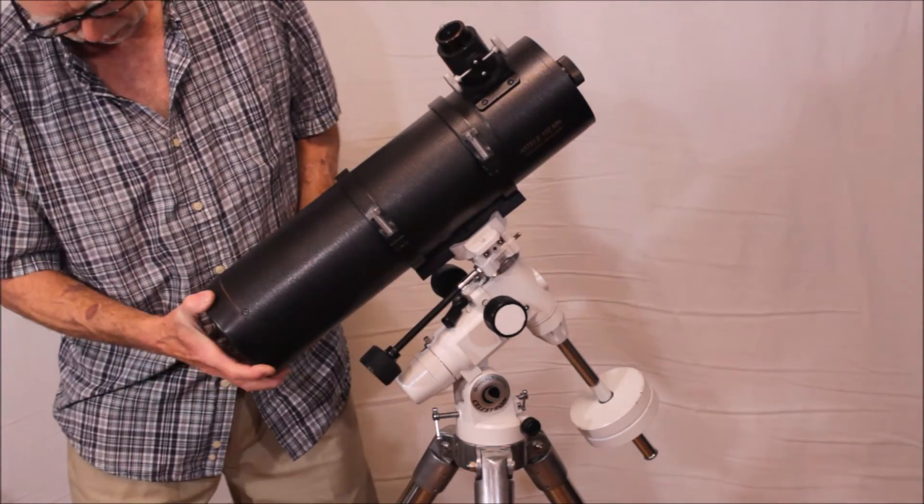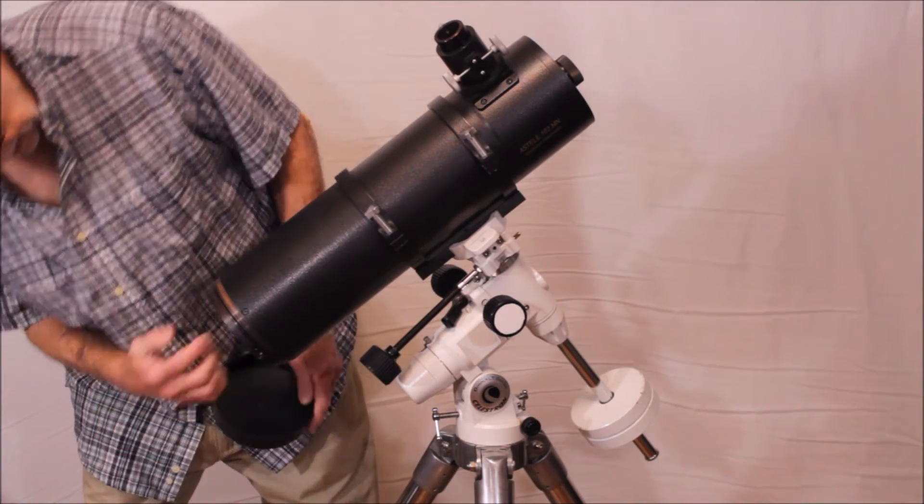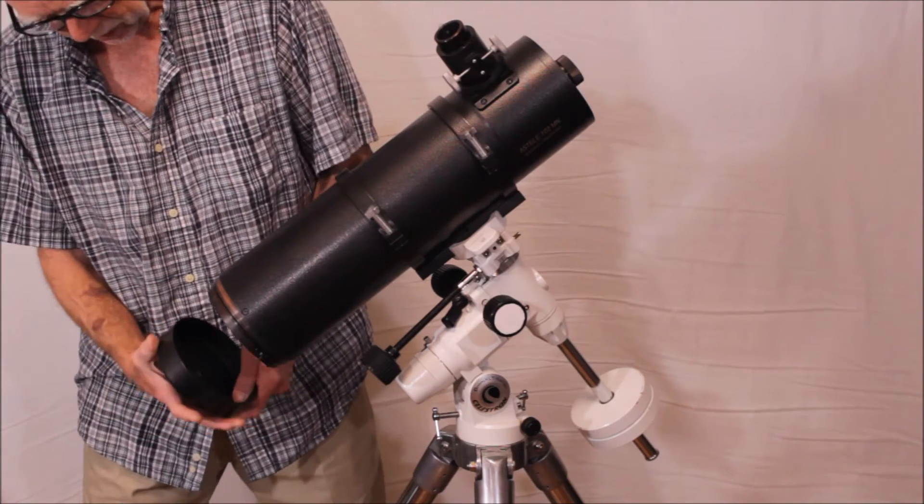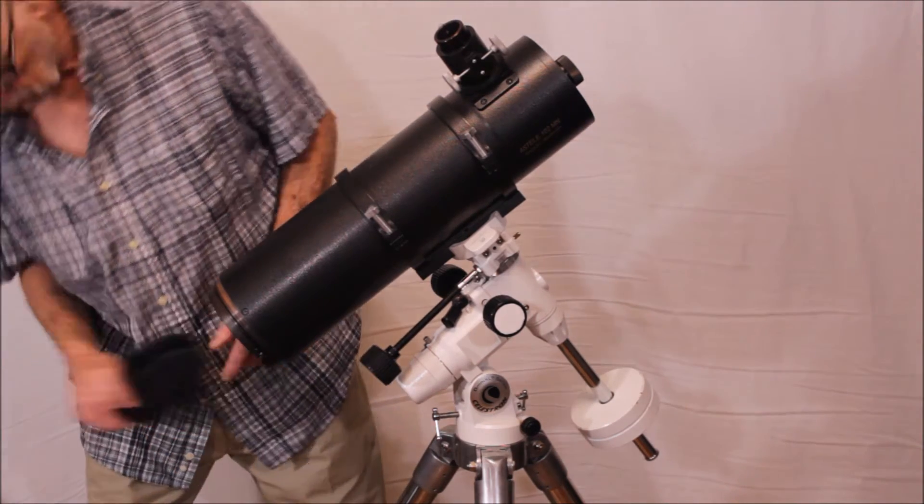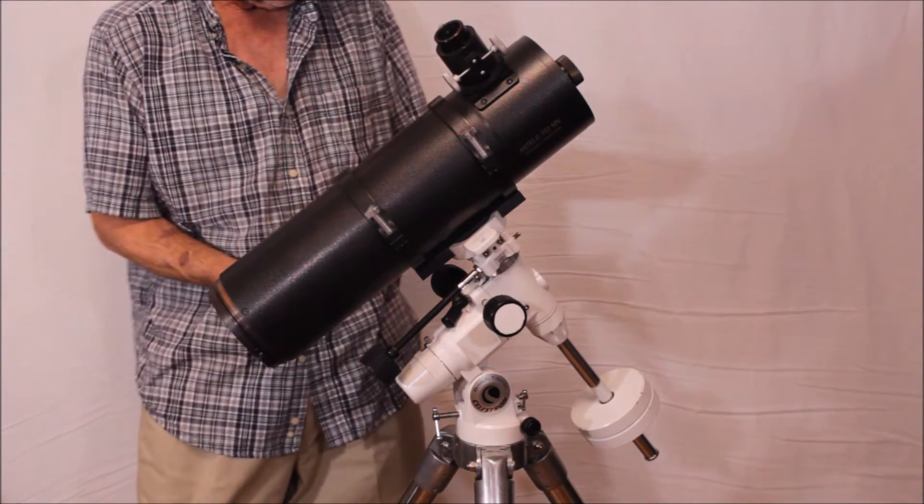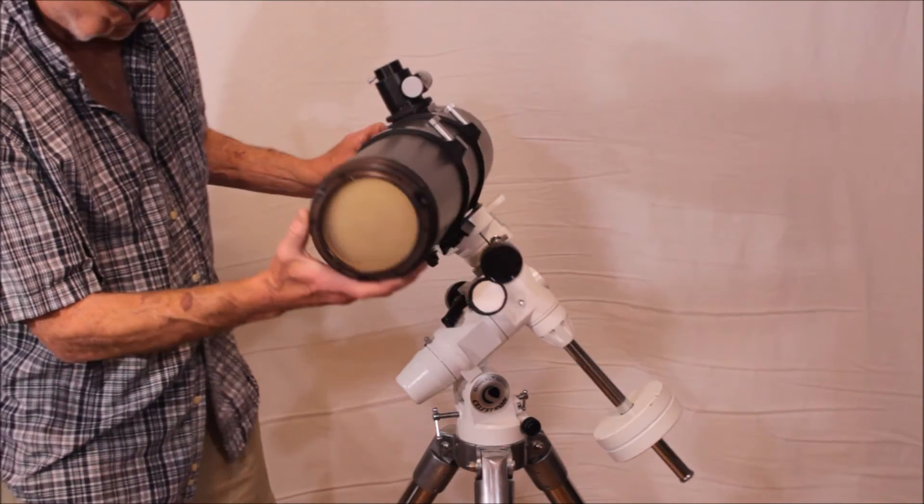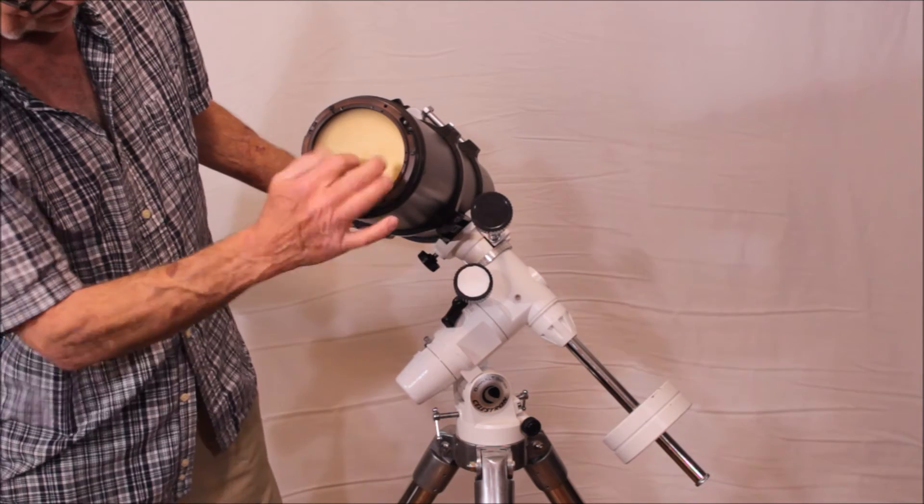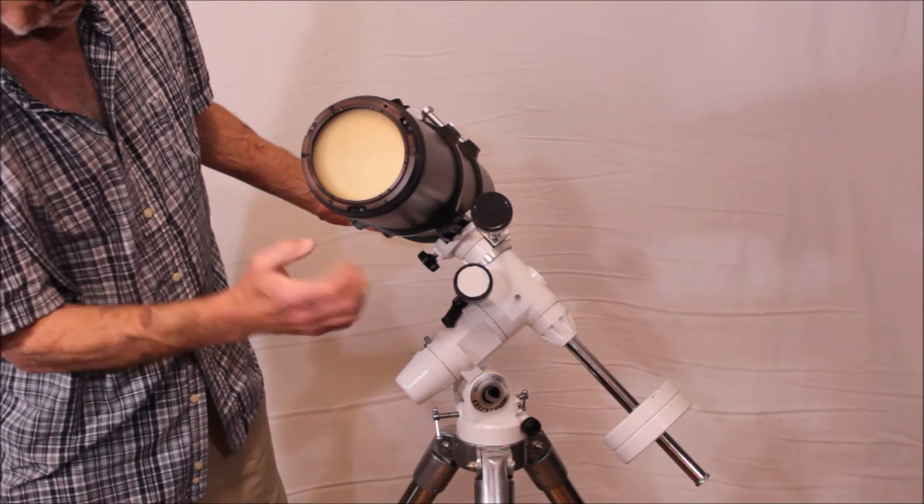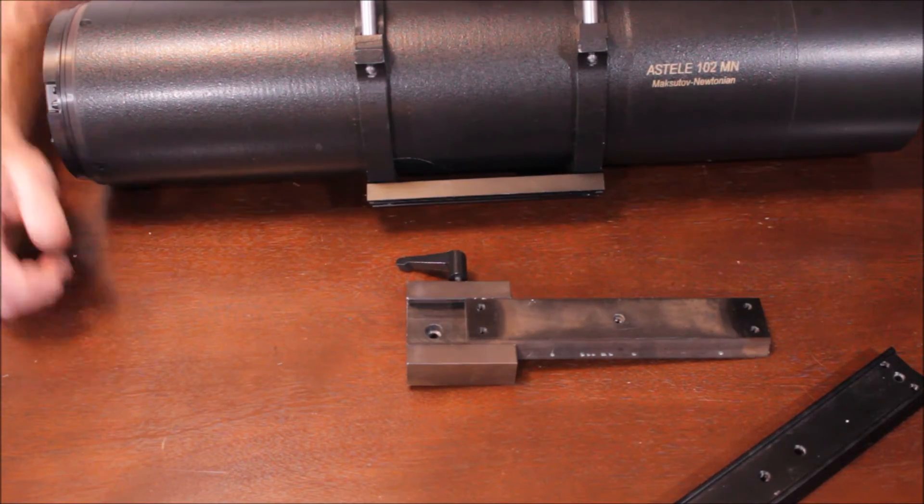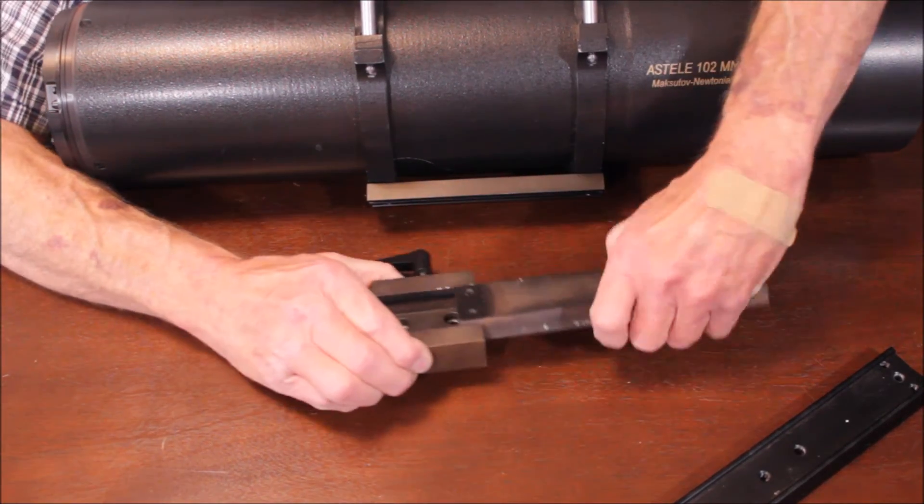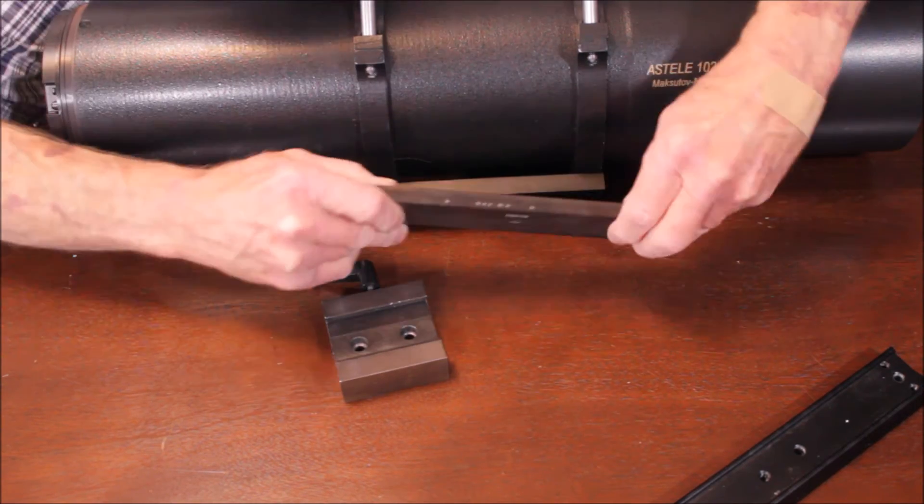The telescope also has a removable cover on the back. This will allow your mirror to cool off a little bit faster and there's your collimation screws and all that. Let me turn this around so you can see it. That's actually the back of the mirror right there and these are all collimation bolts. Here's something interesting about this scope.